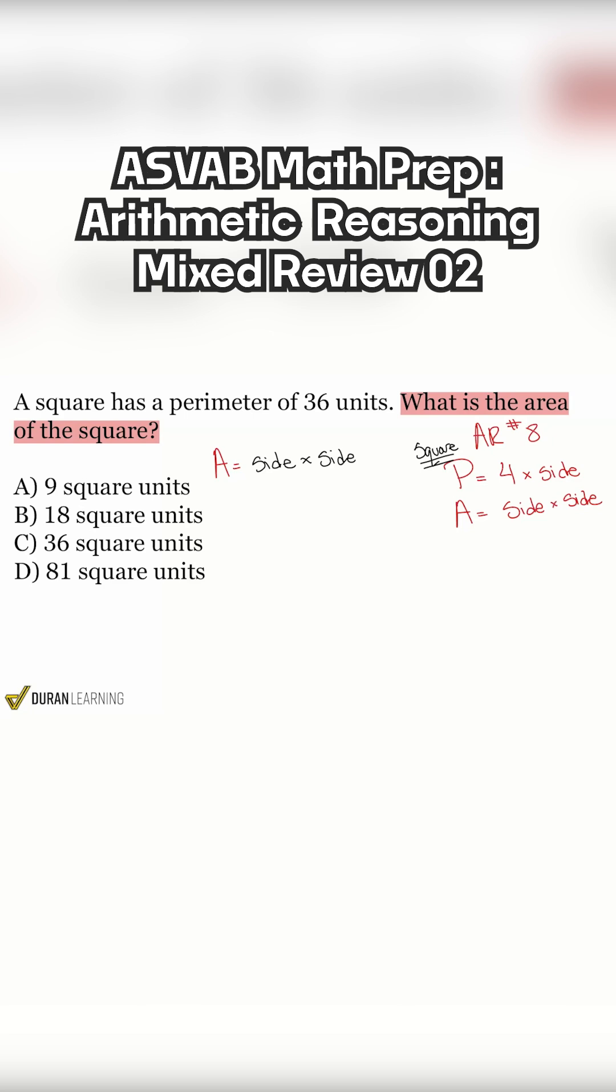My party people, did they give us the side explicitly? No, not at all. What did they give us though? Yeah, they gave us the perimeter right here. Let's highlight this. A square has a perimeter of 36 units.